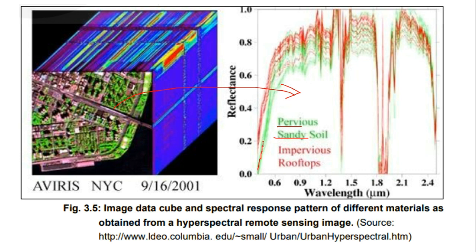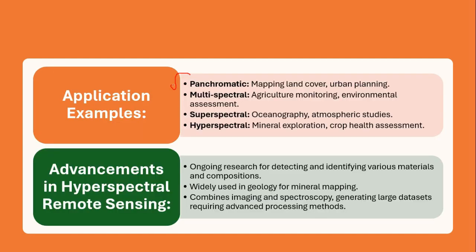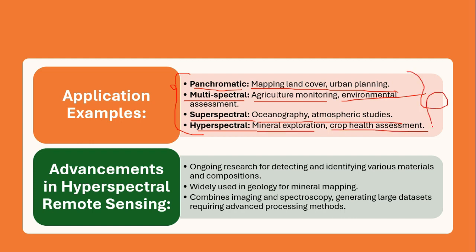A hyperspectral graph showing spectral response of sandy soil and impervious rooftop demonstrates how every bandwidth shows peaks and depths at very narrow intervals, helping identify different features within an image. Applications of hyperspectral remote sensing include atmosphere (water vapor, cloud properties, aerosol mapping), ecology, geology, coastal waters, snow and ice, biomass burning, and commercial uses. Panchromatic sensors are used for land cover mapping and urban planning; multispectral for agriculture monitoring and environmental assessment; superspectral for oceanography and atmospheric studies; and hyperspectral for mineral exploration and crop health assessment.